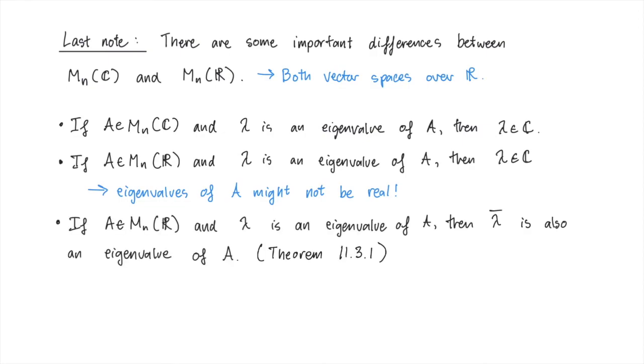If A is a real matrix, and lambda is an eigenvalue of A, then lambda bar, the conjugate of lambda, is also an eigenvalue of A. This is theorem 11.3.1, and it's very useful. In other words, the complex eigenvalues of real matrices come in complex conjugate pairs.